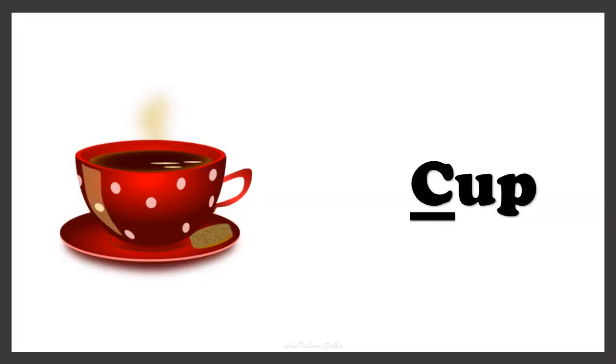Now here we have a picture of CUP. You have to find the article that comes before the word CUP. The word CUP starts with the letter C. C is a consonant, so we use the article A. This is A CUP.